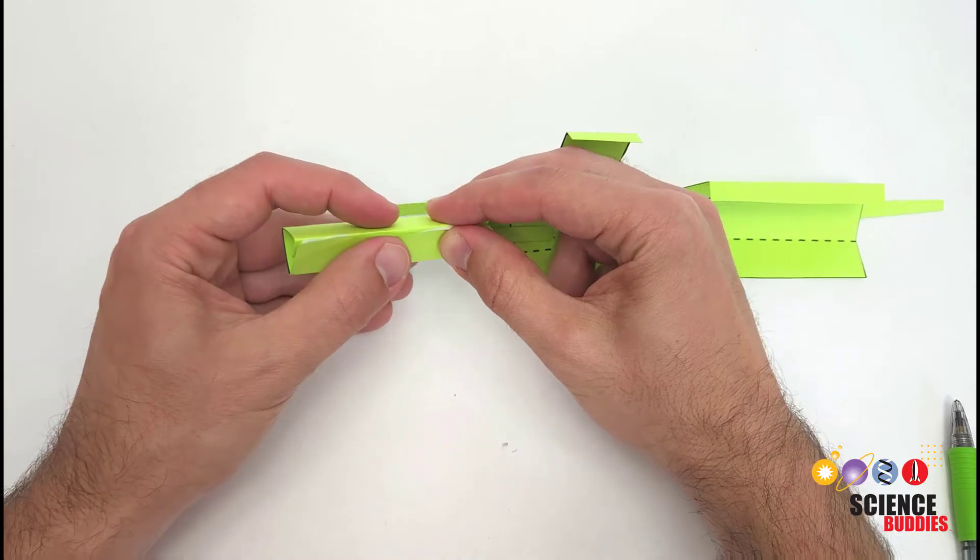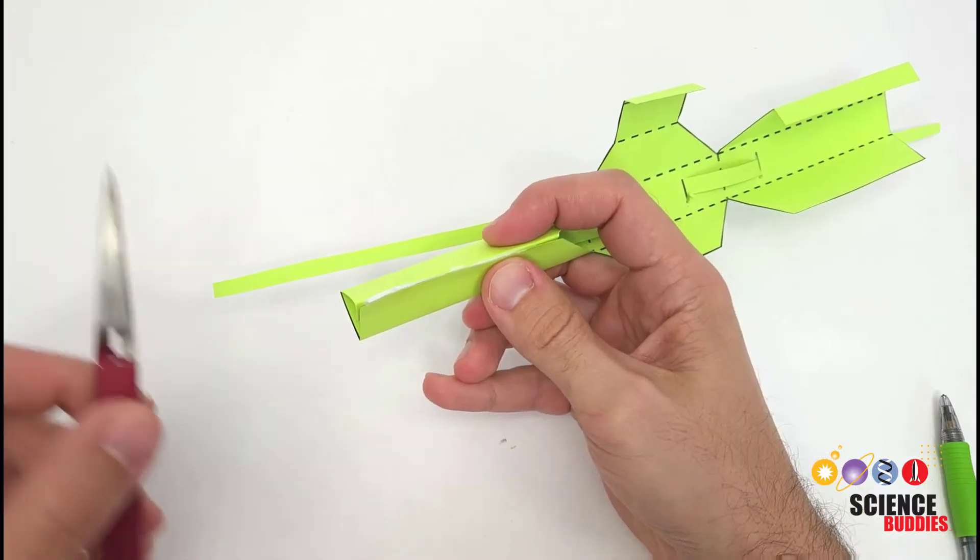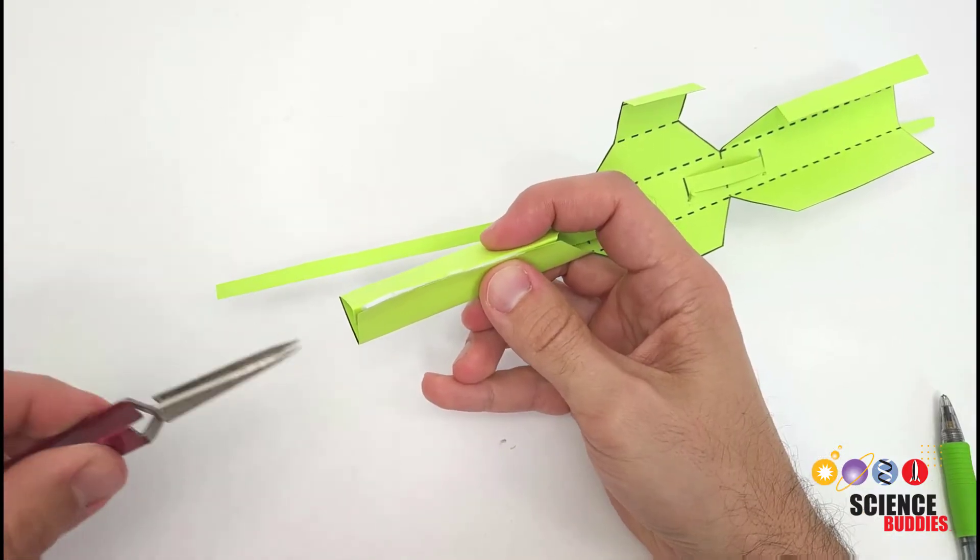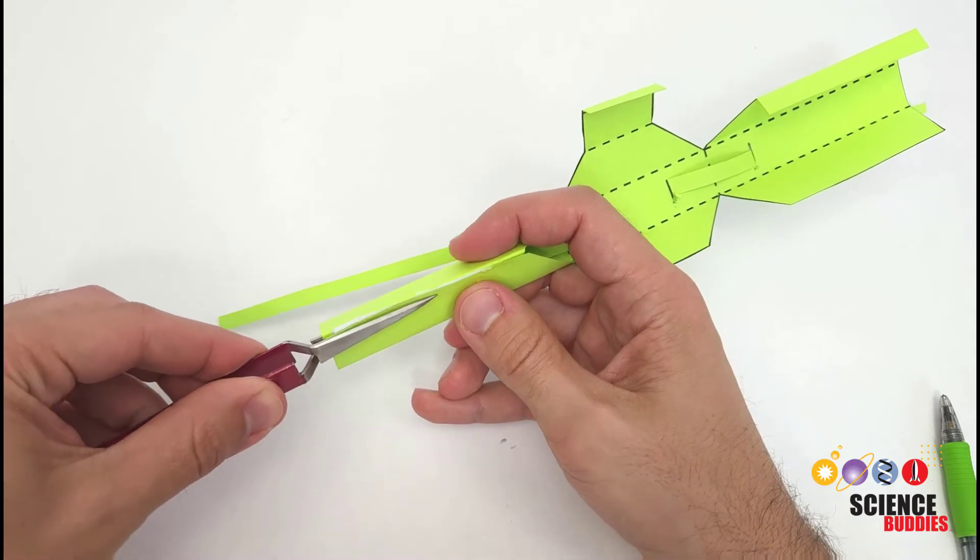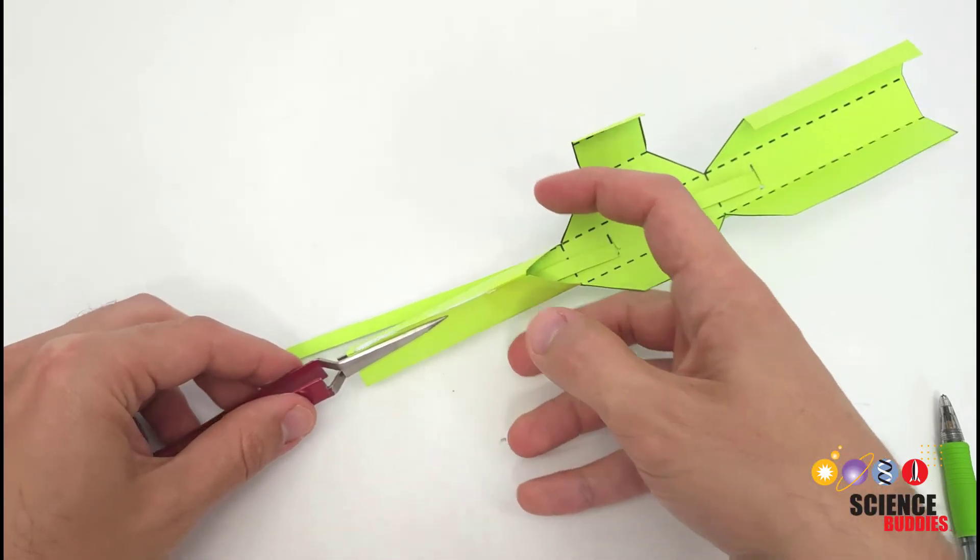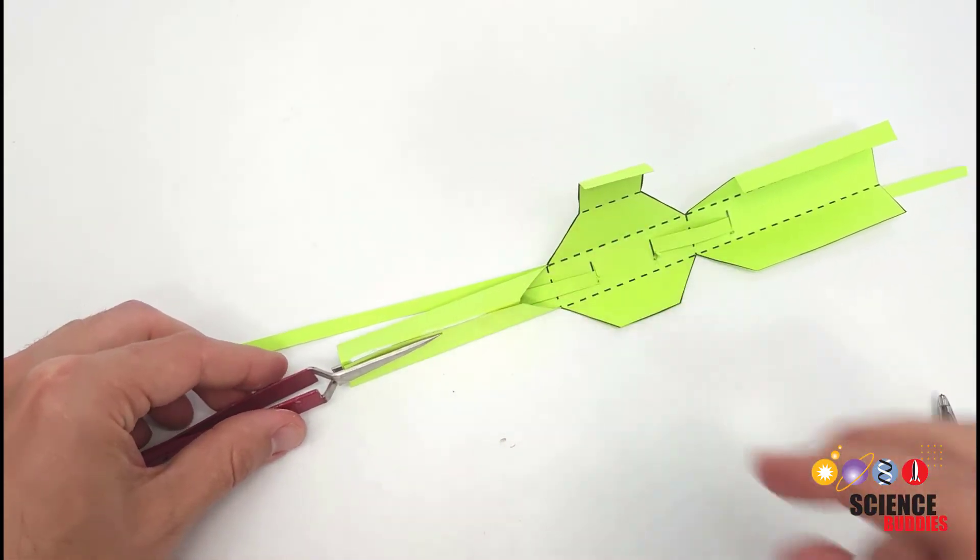You can hold this in place until the glue dries, or if you have some reverse action tweezers available, they are very convenient to simply grab and pinch the paper, and then you can let go until the glue is dry.